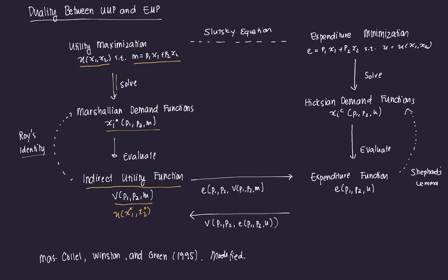That link is through Roy's identity. Roy's identity is a way to recover the Marshallian demand functions, and it is given as x* equal to the negative of the partial of your indirect utility function with respect to price divided by the partial with respect to income. So at any point in the solution, say you were given the indirect utility function and not the direct, it's possible to get the Marshallian demand functions.